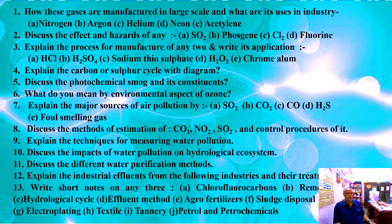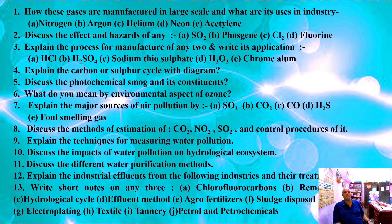The different questions for Industrial and Environmental Chemistry: Question number one — how are these gases manufactured on a large scale and what are their uses in industries? The different gases are: A) nitrogen, B) argon, C) helium, D) neon, and E) acetylene.